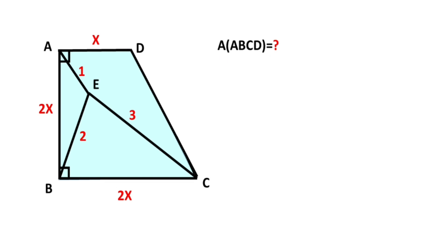First, we know that the area of a trapezoid equals one-half times base one plus base two times height. Base one equals x, base two equals 2x, and the height equals 2x. Therefore, the area of the trapezoid equals 3x². That means if we calculate the value of x, we get the trapezoid area.